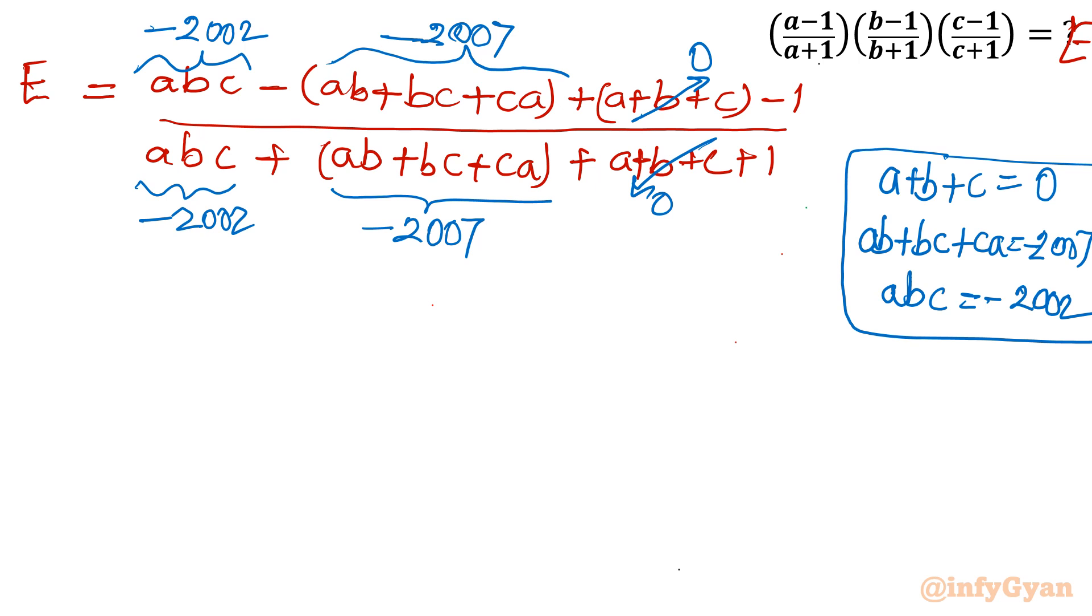So our answer will be, let me put this value first: -2002, minus of minus so let me write here plus 2007, then we have minus 1. Divided by -2002, this time we will write minus because outside it is plus sign, and plus 1.